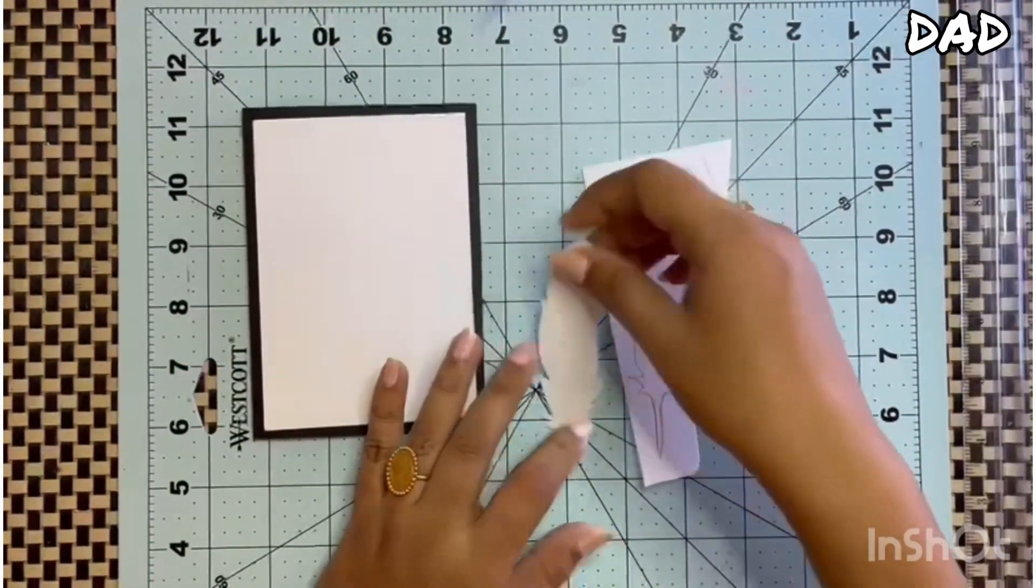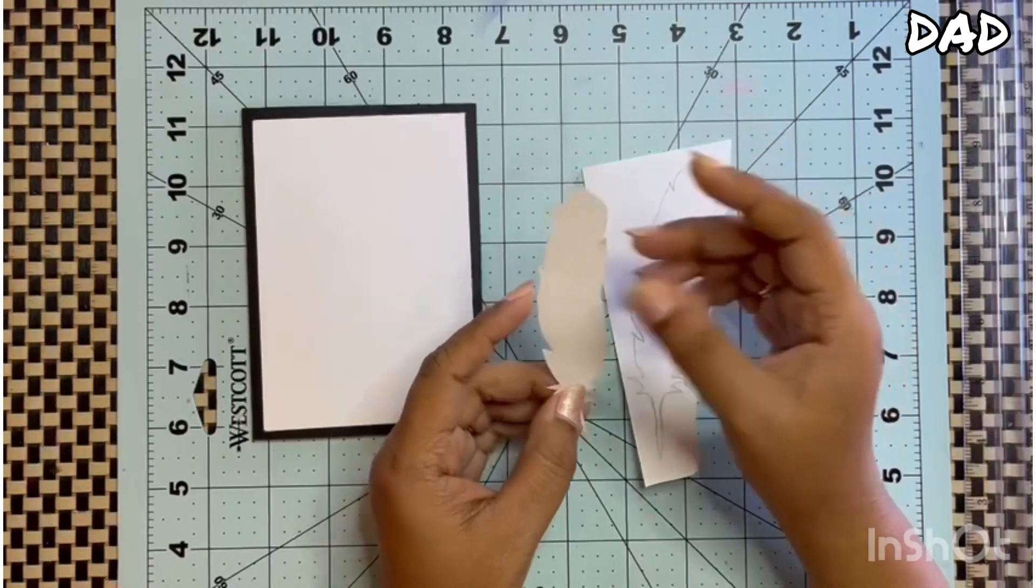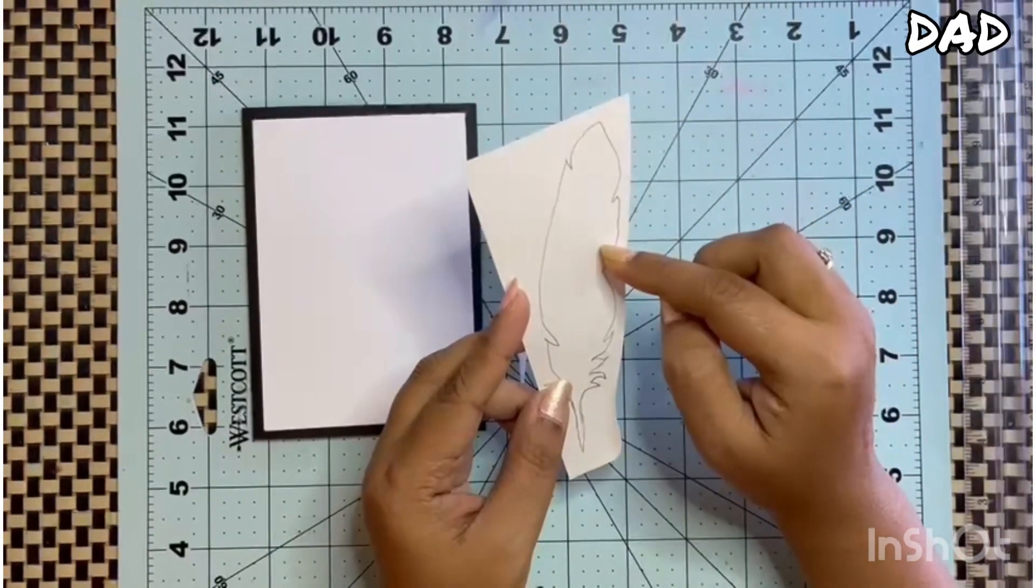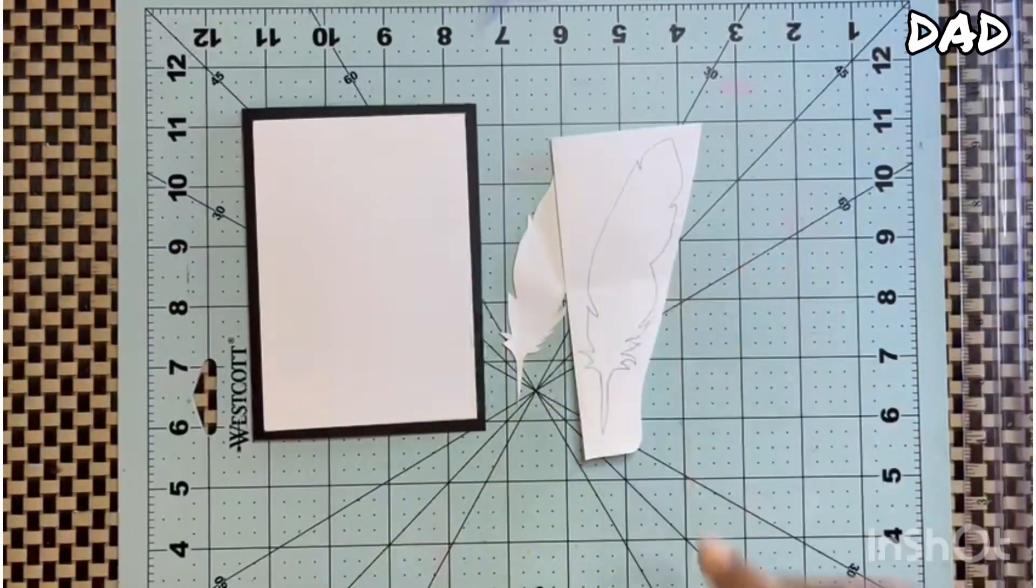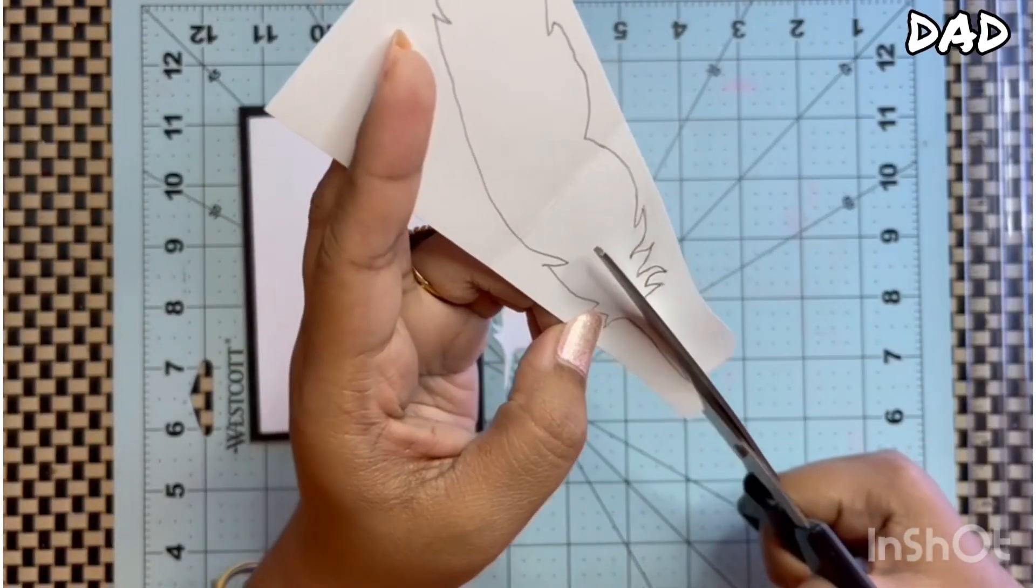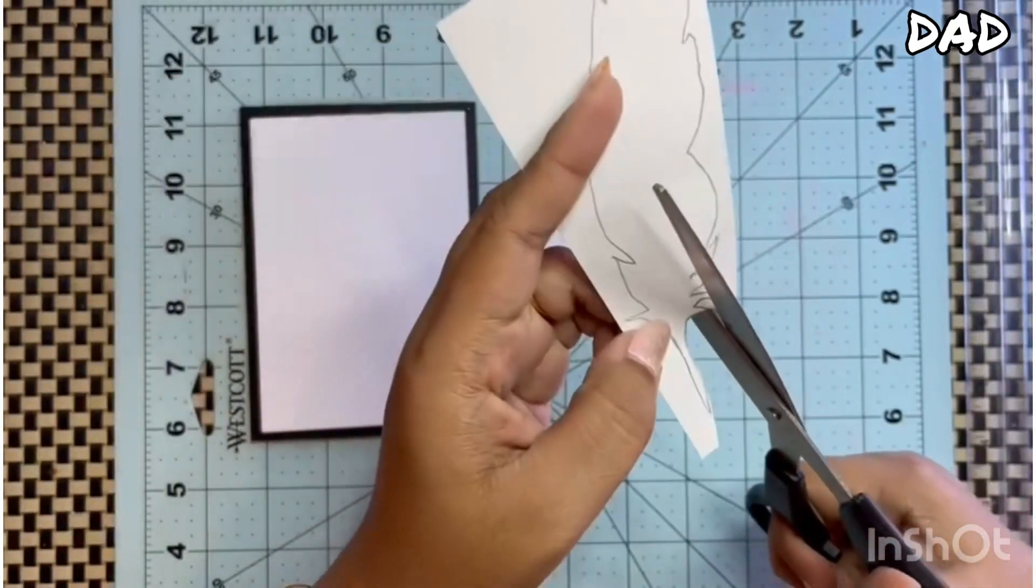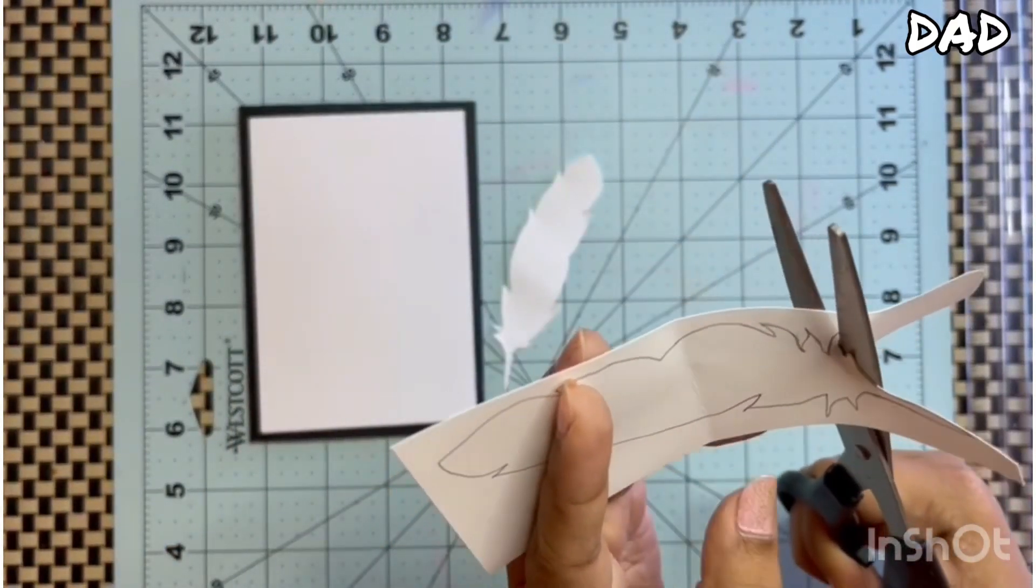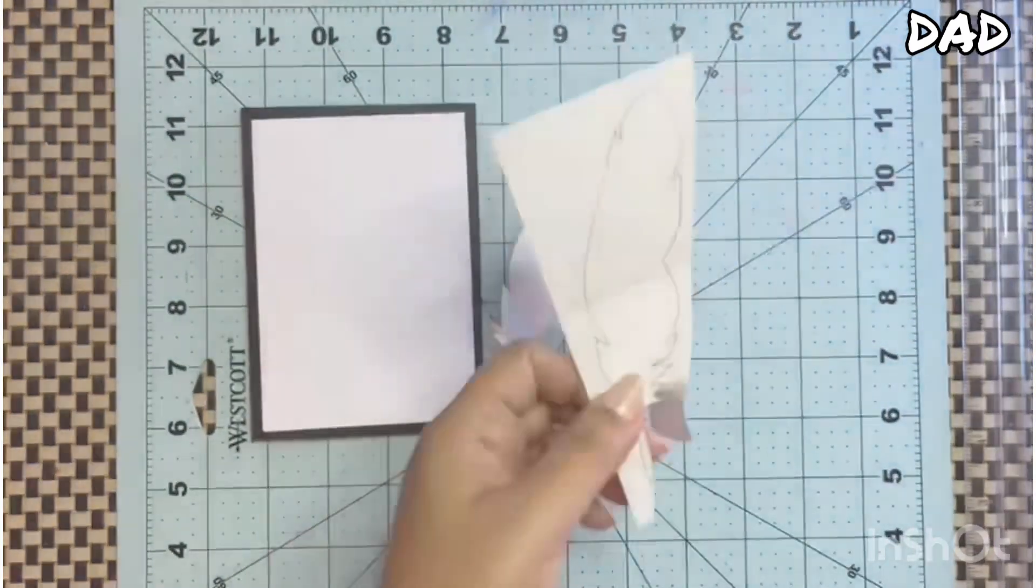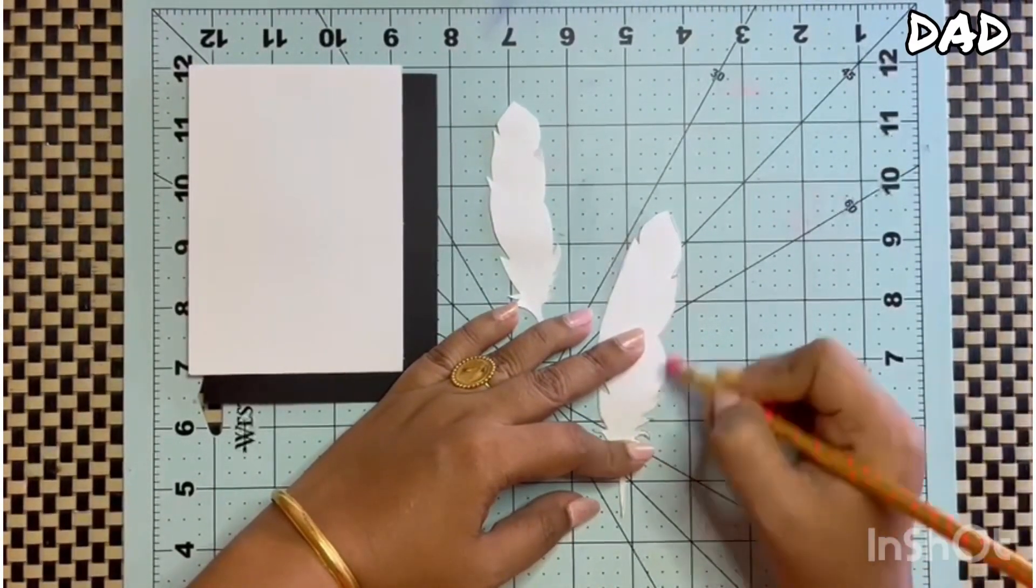And here is my feather cutout. This is freehand drawn and then I have cut it with the help of my scissors. I will be giving the link of the template in the description box. Now I will be cutting the feathers. I have two feathers here and I will be using these two feathers only in my card. I don't want these pencil marks so I will be erasing all the marks with the help of my eraser.